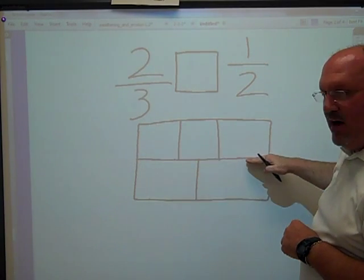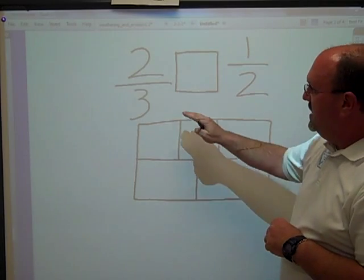Draw a rectangle, cut it in half this way, horizontally, and then take your thirds.